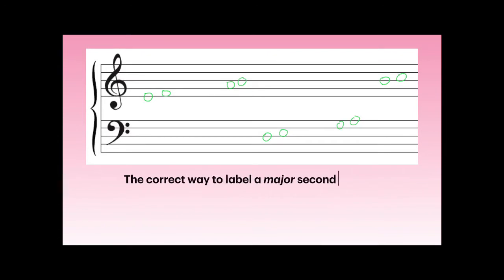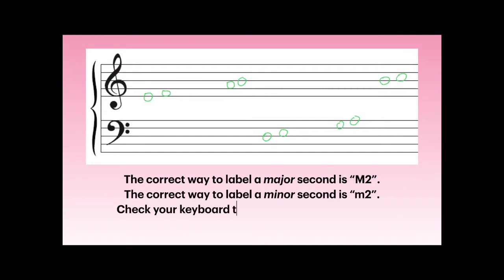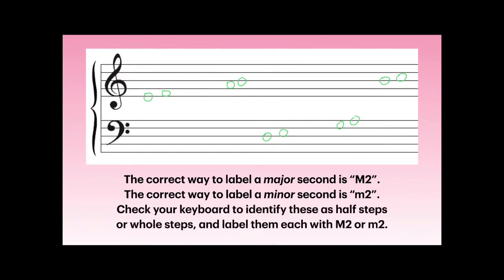The correct way to label a major second is with a capital M and the number 2. The correct way to label a minor second is lowercase m with a 2 next to it. Check your keyboard to identify these as half-steps or whole-steps, but label them this time as capital M for major second or lowercase m for minor second.